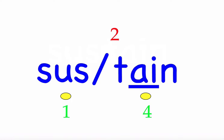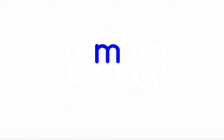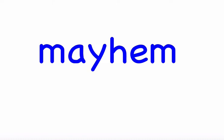The next word is 'mayhem.' All mayhem broke loose last night. First syllable 'may' — two sounds, M-A-Y. Second syllable 'hem' — three sounds, H-E-M. Mark the word. Mayhem.